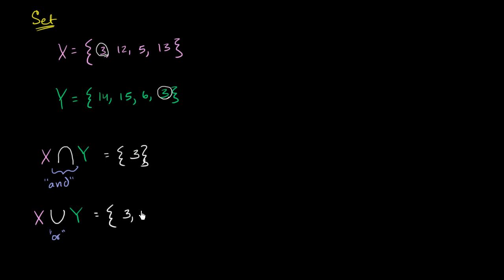So I'll put a 3 there. A 12 is in X or Y. A 5 is in X or Y. The 13 is in X or Y. And just to simplify things, we really don't care about order if we're just talking about a set. I've just put all of the things that are in set X here. And now let's see what we have to add from set Y. So we haven't put a 14 yet, so let's put a 14. We haven't put a 15 yet. We haven't put the 6 yet. And we already have a 3 in our set. So there you go, you have the union of X and Y.